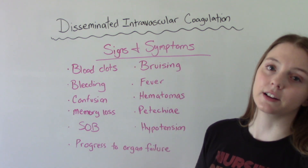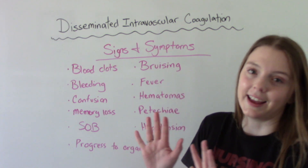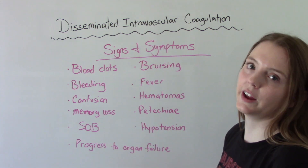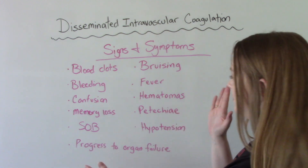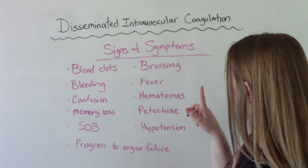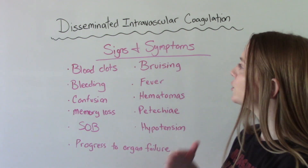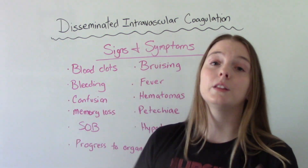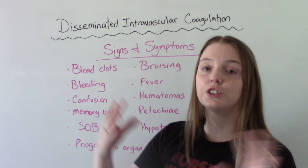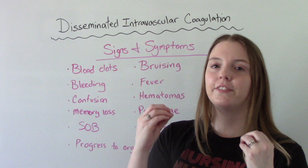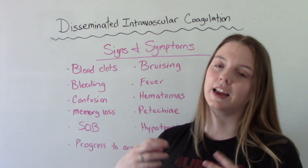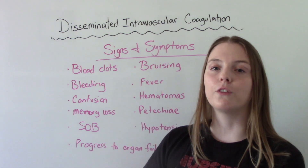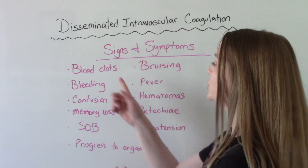They will be hypotensive on vital signs. The big concern is that DIC can progress to organ failure, represented by symptoms like shortness of breath and petechiae. The organ failure is caused by blood clots forming all over the body, leading to lack of oxygen to those organs. So you can see strokes, heart attacks, and pulmonary embolisms all happening as a result. We want to watch for symptoms of those conditions and try to control the bleeding.